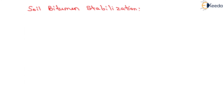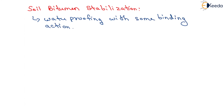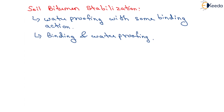The basic principle of bituminous stabilization is considered as waterproofing with some binding action. By waterproofing, the inherent strength and other properties of the soil could be retained. In the case of cohesionless soil, the binding action is also important. Generally both binding and waterproofing actions are provided to the soil. In granular soils the coarse grains may be individually coated and stuck together by a thin film of bituminous material, but in fine-grained soil bituminous material plugs up the voids between small soil clots, thus waterproofing the compacted soil bitumen.